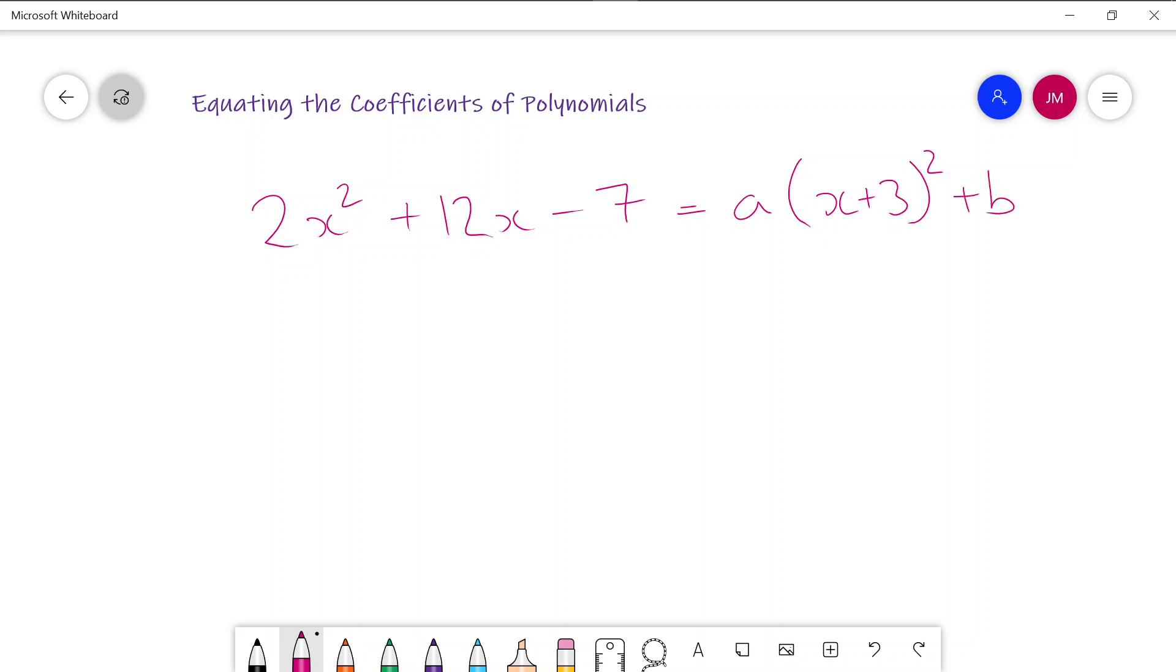So what we're looking at is how do we represent a polynomial in a different form. And this will come in handy later on when we're trying to solve equations or sketch. But for now we've got a different form of the polynomial but it's got 2 unknowns a and b. So let's say we were trying to find a and b.